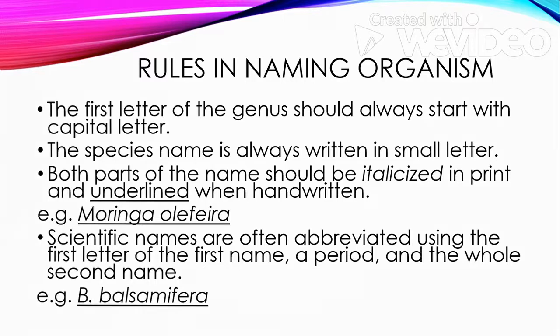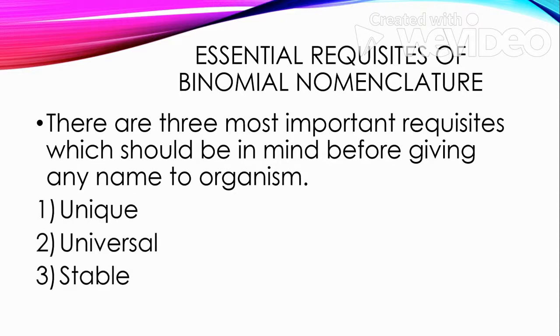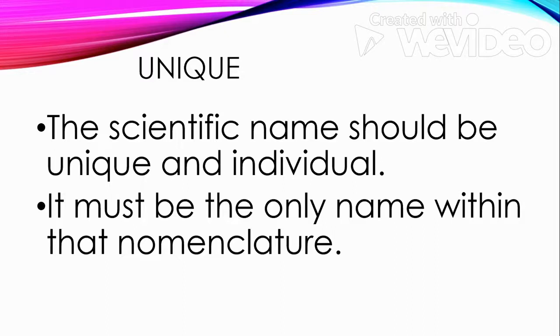Next are the essential requirements in naming organisms. There are three most important requisites to keep in mind before giving any name to an organism: it should be unique, universal, and stable. When you say unique, the scientific name should be unique and individual — it must be the only name within that nomenclature.